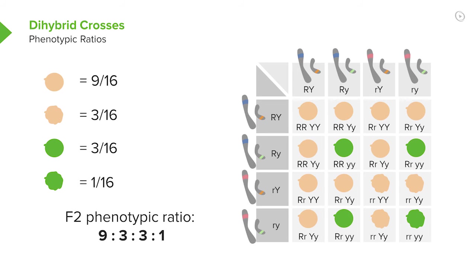Mendel would breed thousands of pea plants. So the numbers that he actually got were up in the thousands, and he would count them up and say there were 9,000 of these and 3,000 of those and 3,000 of those and 1,000 of those. Of course, the numbers didn't land right on the money, but those were the ratios that he achieved.